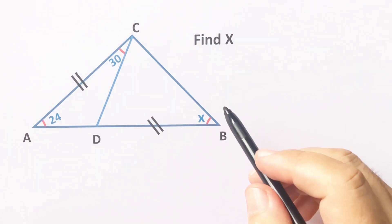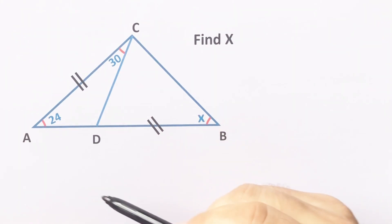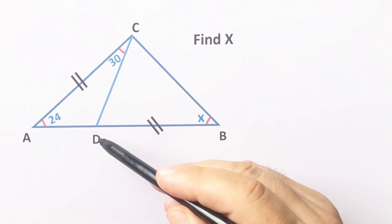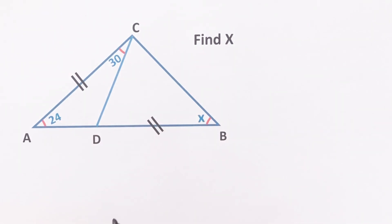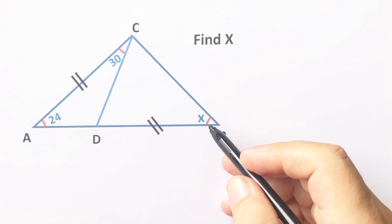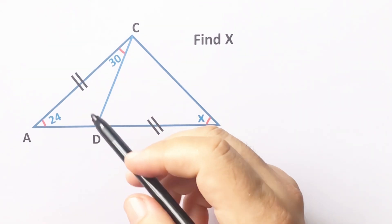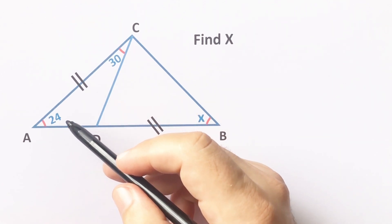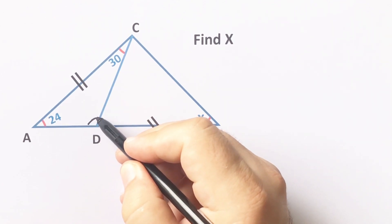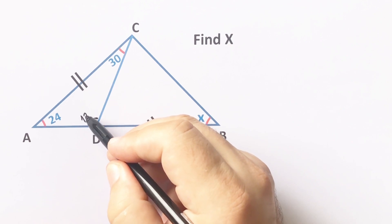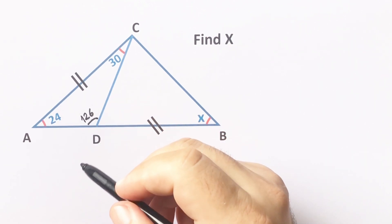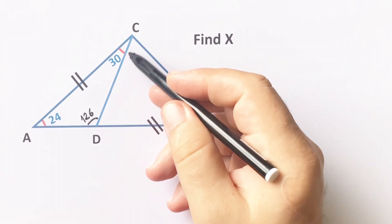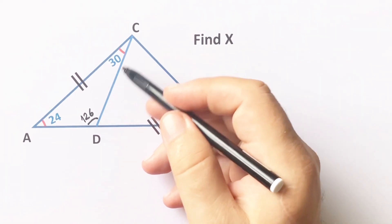Hello everyone. In this video we have a nice question: here is 24 degrees, here is 13 degrees, and these two parts are equal, and x is asked. First of all, for this triangle we know that the sum of the interior angles equals 180 degrees, therefore here must be 126 degrees.